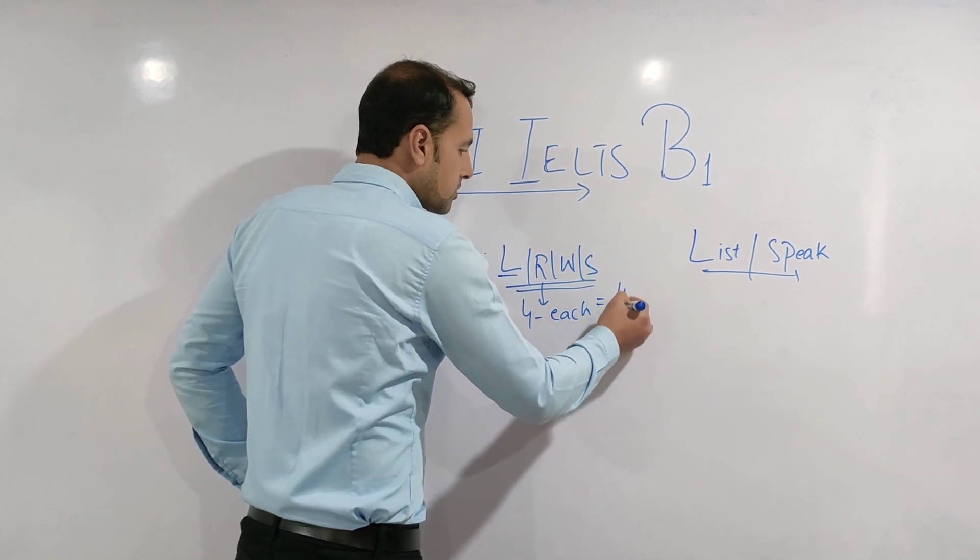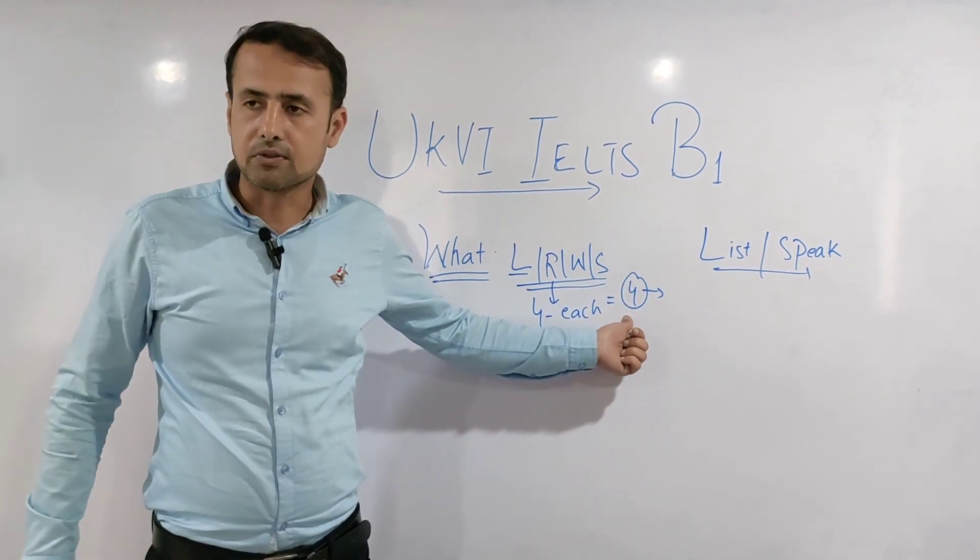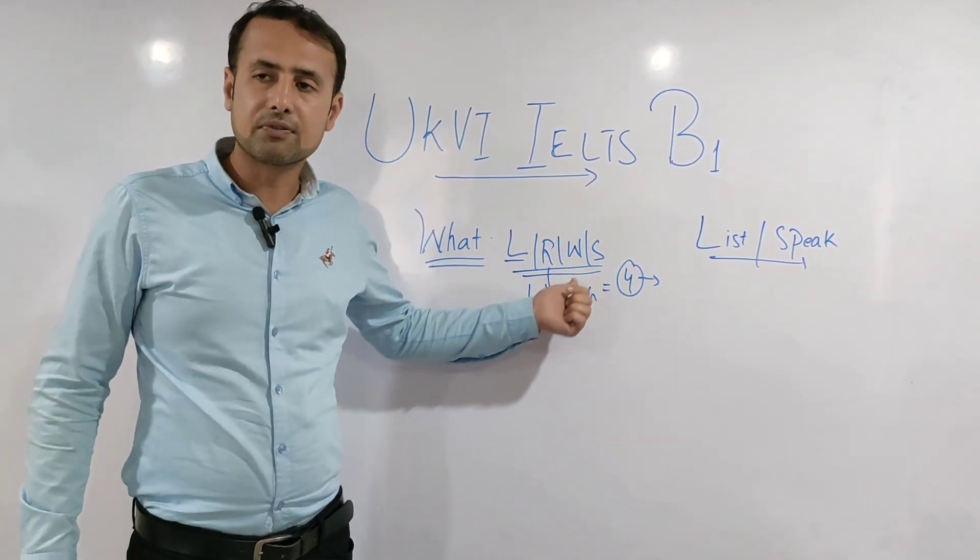If they are scoring four overall or 4.5 overall, but less than four in any component, it means they are below that B1 level in individual cases.